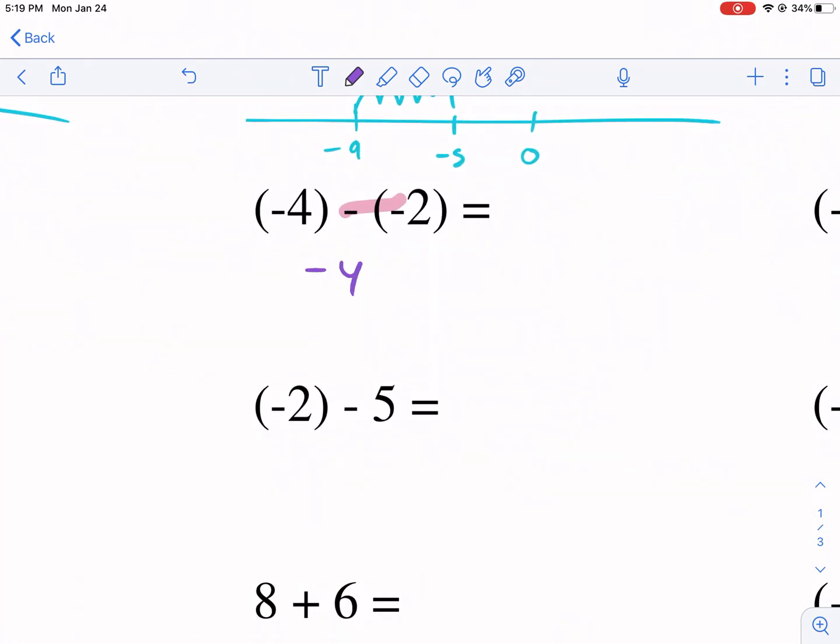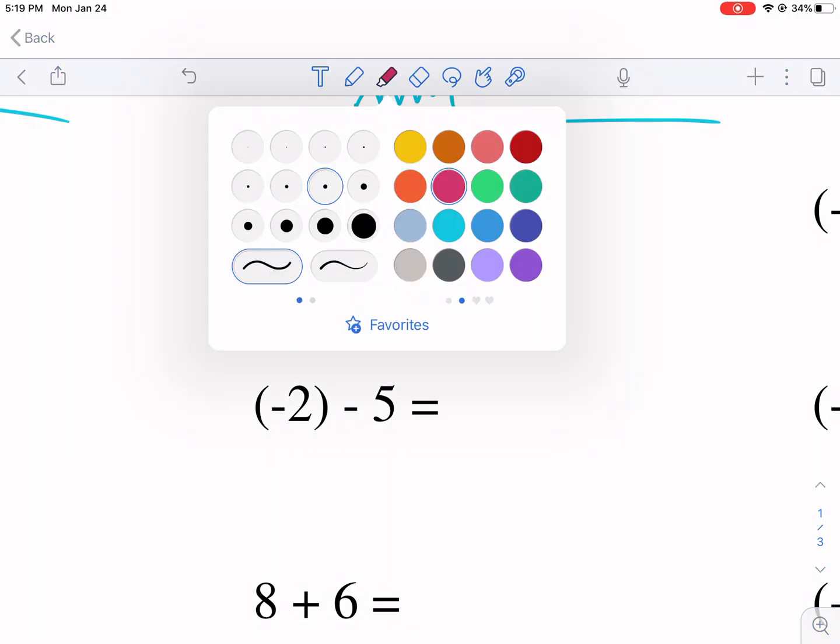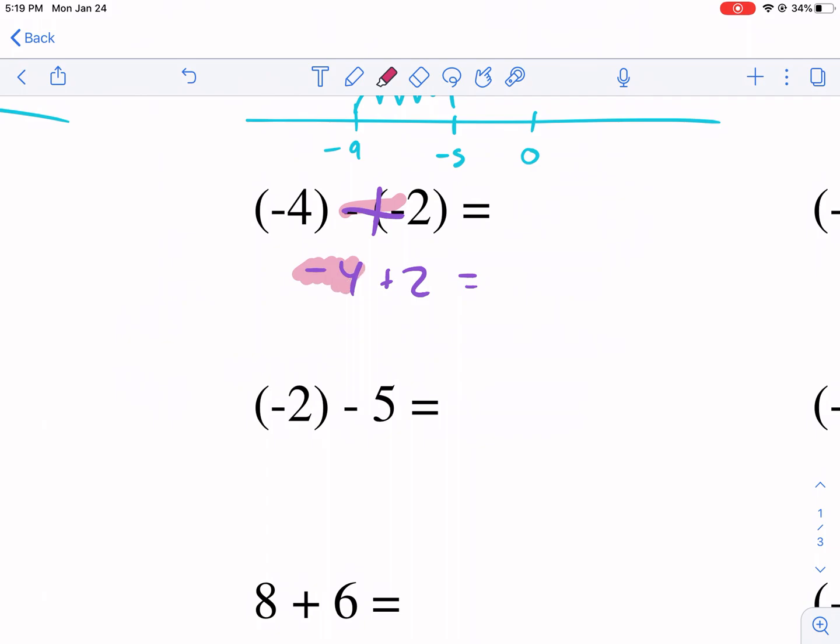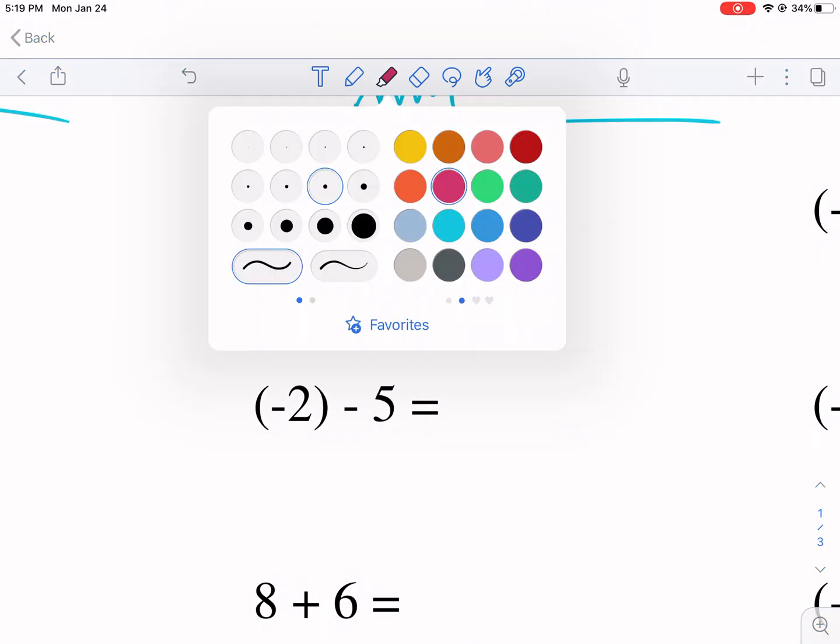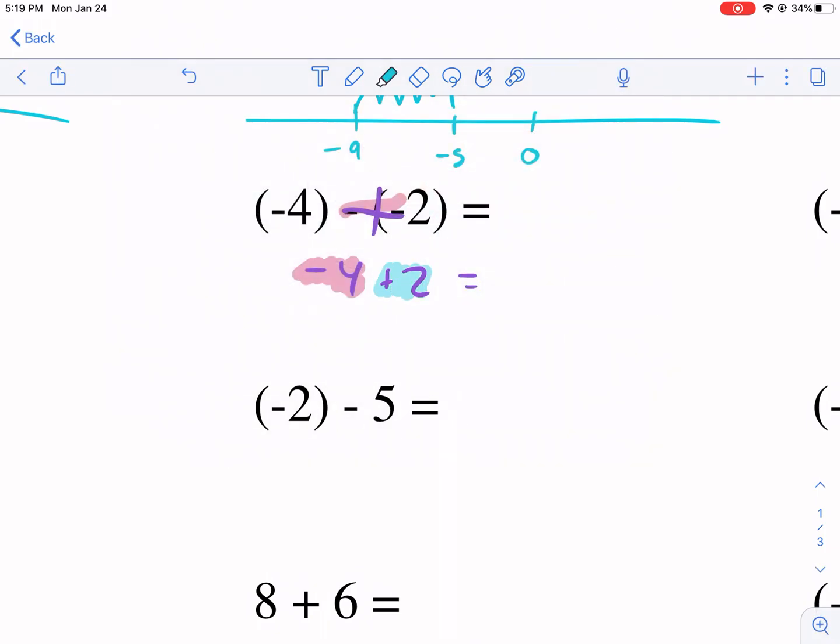We have negative four. We're going to change this to plus, plus two. This is what I was talking about with two different teams. So we have a minus team. This time it's the minus four. We have a plus team, the positive team, two.